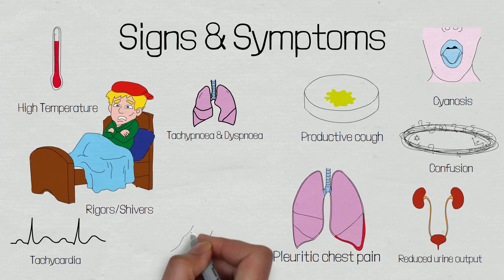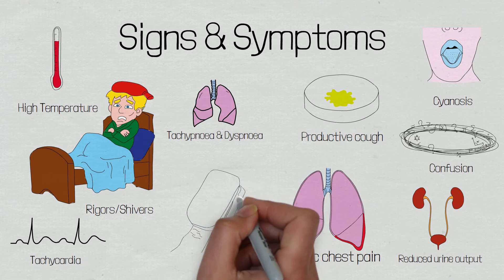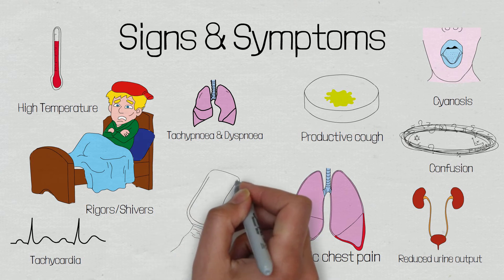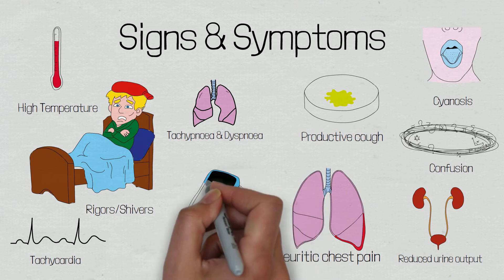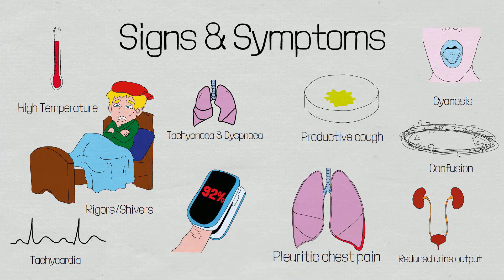Also, a severe tachypnea — a significantly elevated respiratory rate — a significant tachycardia, or very low oxygen saturations would be quite alarming signs in these patients. Now we know what kind of signs and symptoms these patients will present with, we can move on to the physical examination, which is especially important in the pre-hospital environment, as this is where we're going to be assessing the severity of a patient's illness and establishing the correct care pathway.